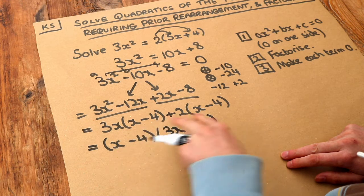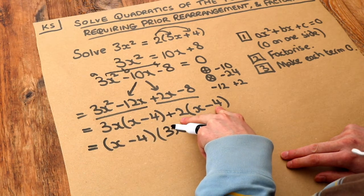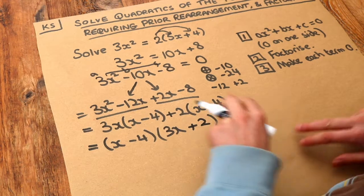And x minus 4 times what is plus 2 times x minus 4? Well, it's plus 2.